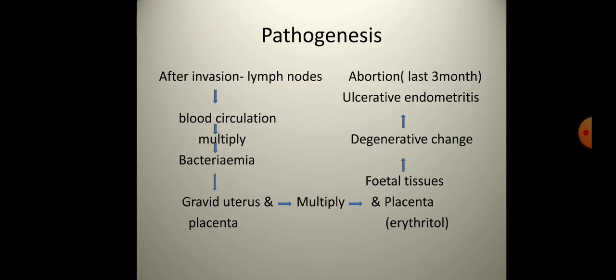The organisms multiply in the gravid uterus and placenta. The placenta contains erythritol, and there are degenerative changes in fetal tissue leading to abortion in the last three months, with ulcerative endometritis. Erythritol is a key factor in the infection because, in the later stages, the placenta releases this sugar, which causes necrosis between the cotyledon and caruncle.